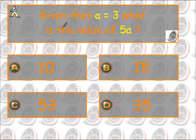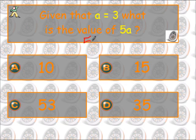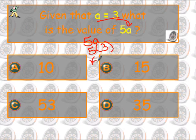Over here, we've got: given that a equals 3, what is the value of 5a? So again, remember that you have to write down your problem first — 5a. When these are next to each other, it means substitution. They told us a equals 3, so wherever I see an a, I'm going to plug in a 3. So we're going 5 times 3, and that is 15.